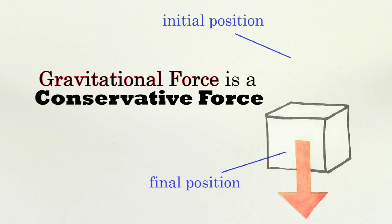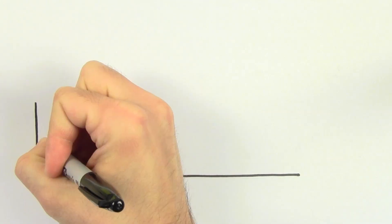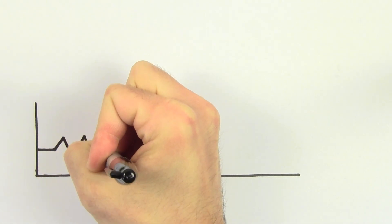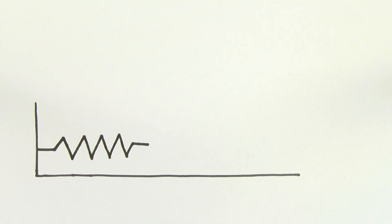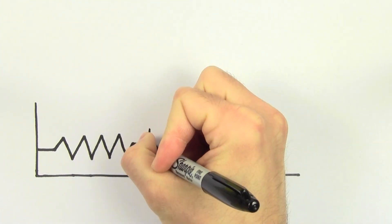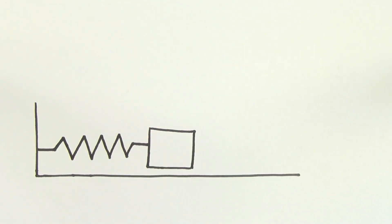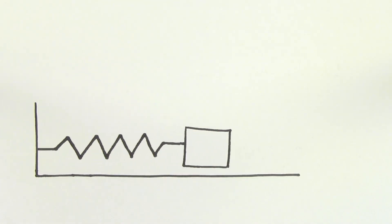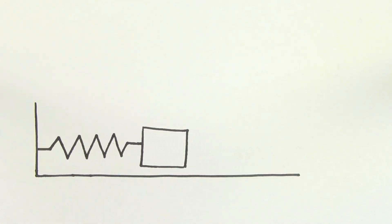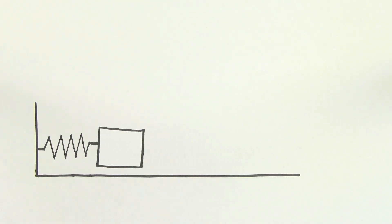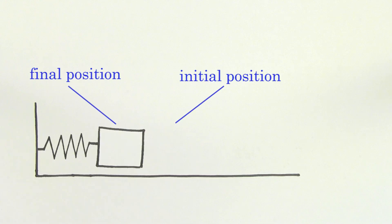The force exerted by a spring is another example of a conservative force. The total work done on a mass by a spring does not depend on the path taken by the mass. It only depends on the initial and final positions of the mass.